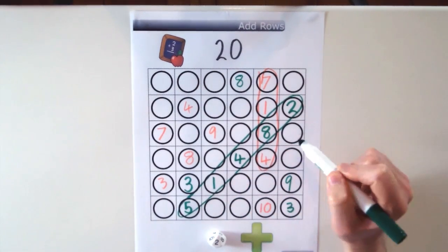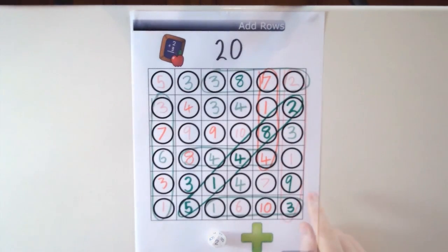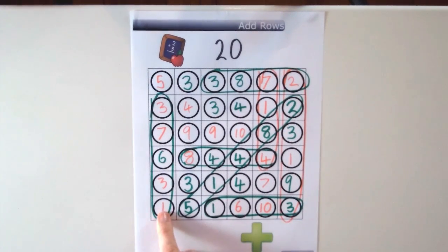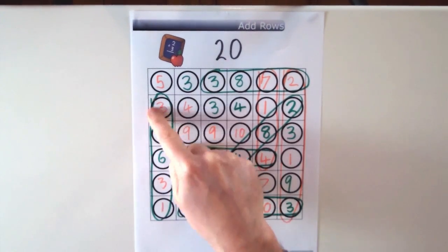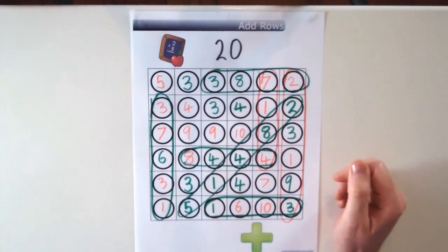Because all the numbers added together equal the target number 20. And the game finishes when all the numbers have been taken up into all the circles. The winner is the player who has the most combinations that equal the target number.